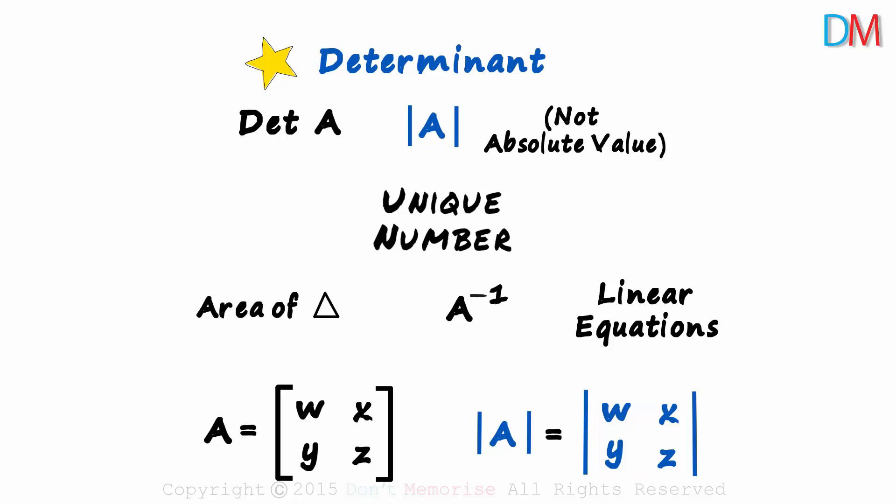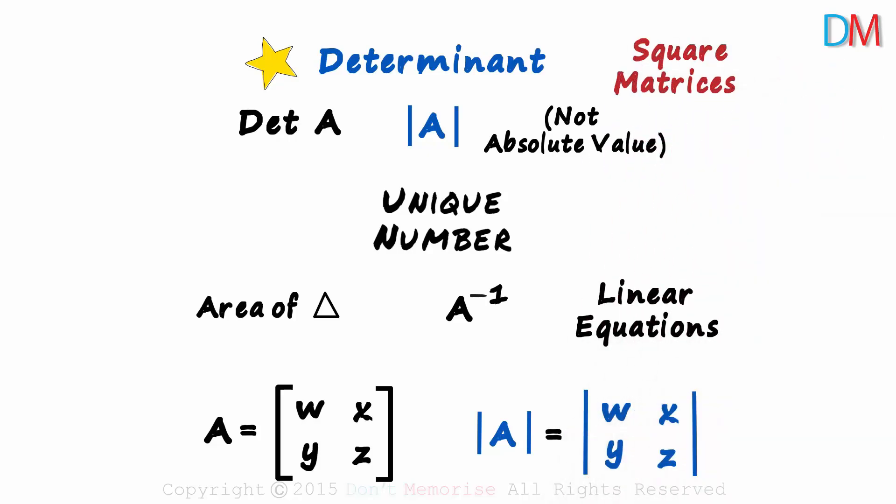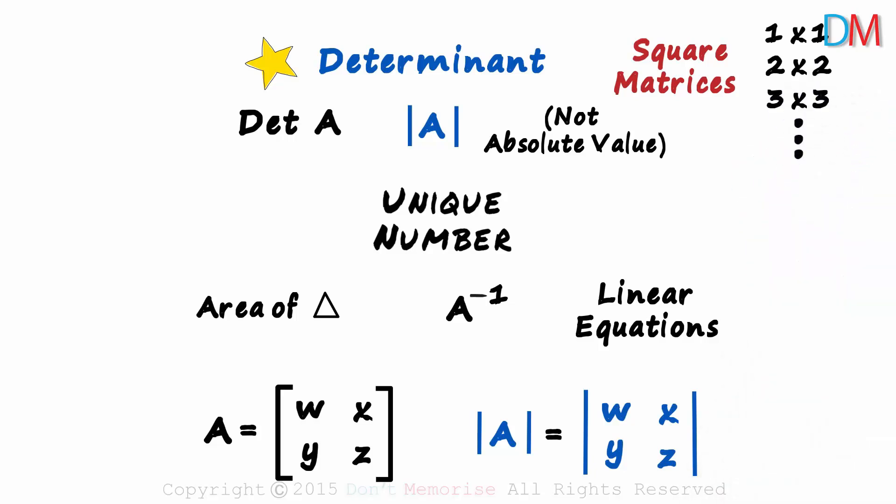And the last thing we need to know about the determinant of a matrix is that it can calculate only square matrices. Yes, it will work only for matrices of the order 1 by 1, 2 by 2, 3 by 3, and so on.